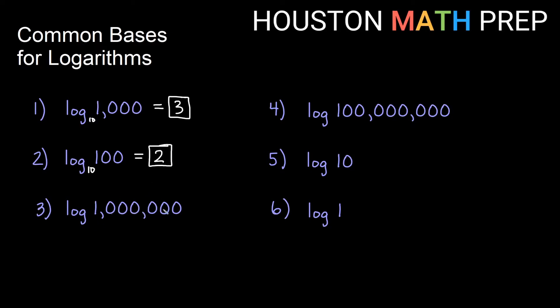10 to what power here gives us a million? Log of a million, we're assuming base 10 then. 10 to what power gives us a million? Counting the zeros gives us 6.